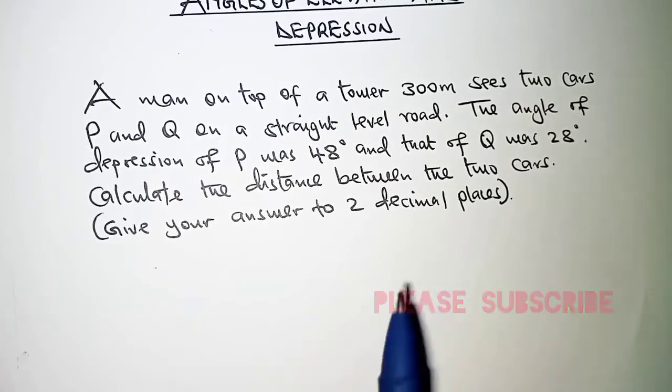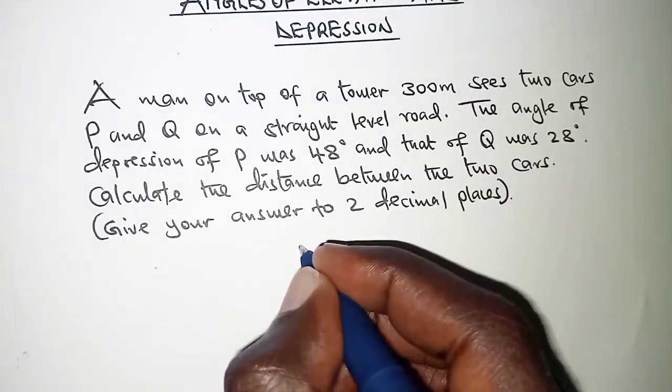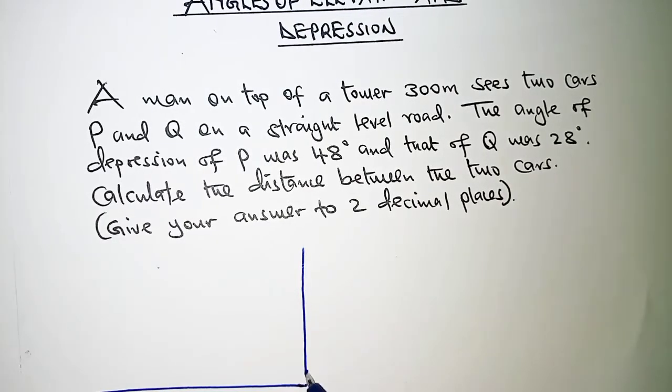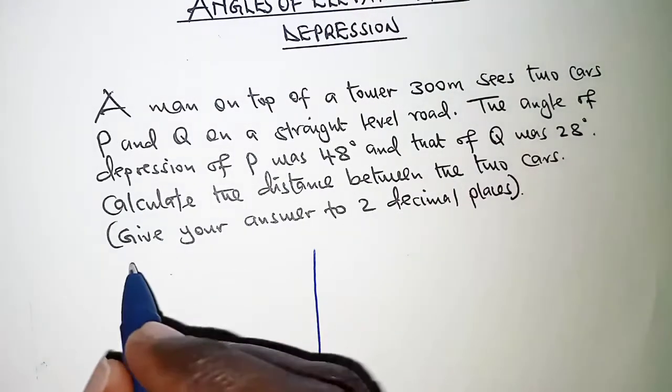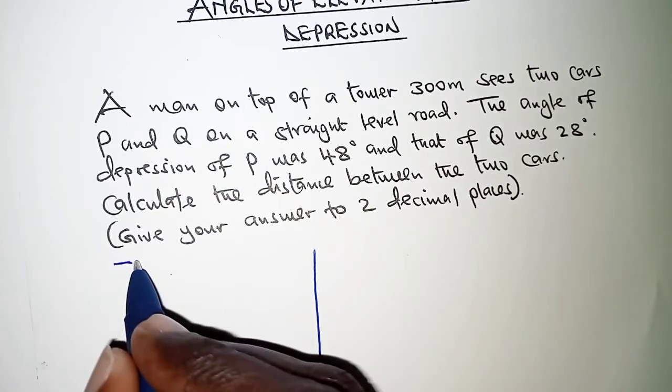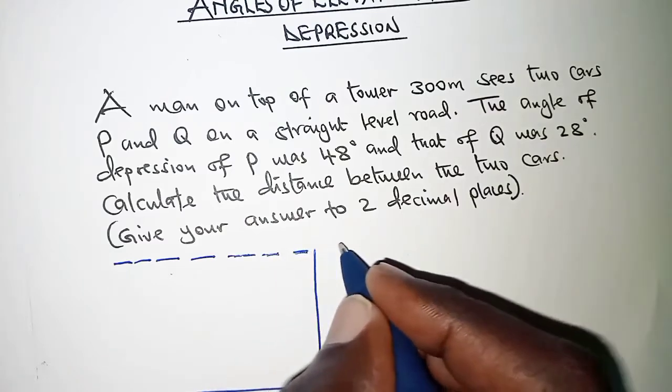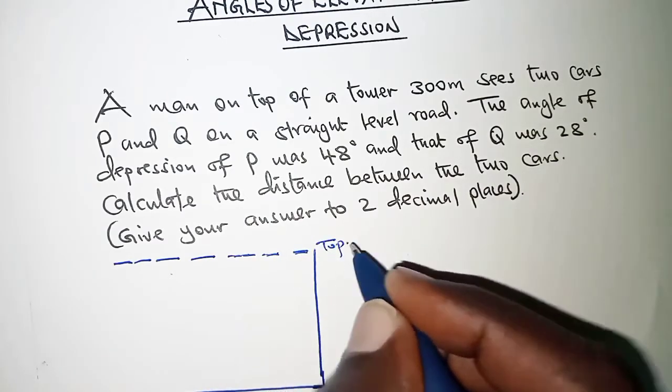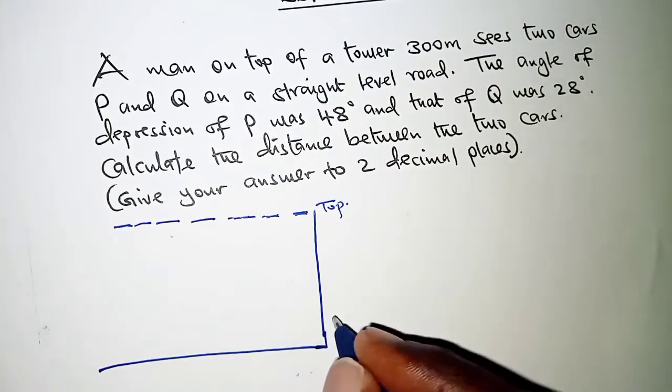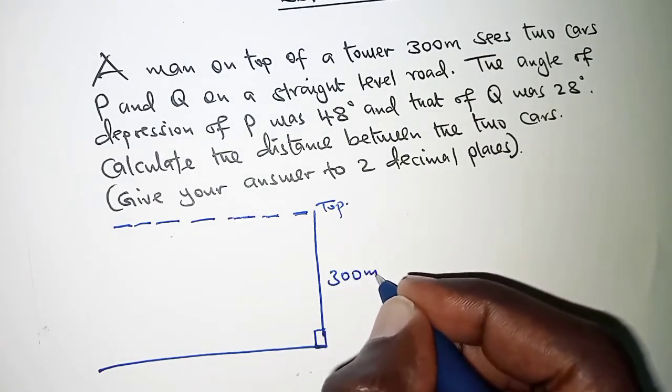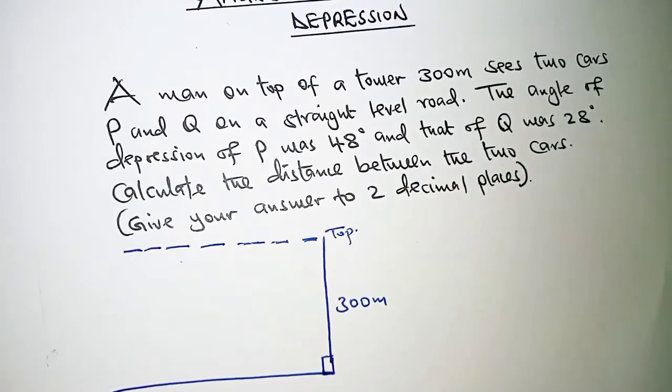So, first thing we need to interpret this in a diagram. So, we have a man at the top of the tower. This is where we have the top and then we are told that the tower is 300 meters high or tall.